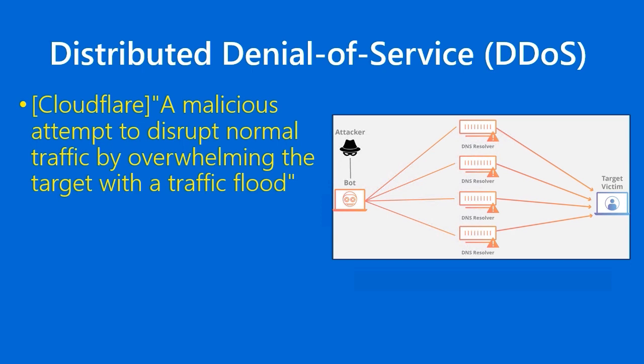A Denial of Service occurs when a server is no longer able to offer what it's supposed to to customers. From time to time you hear about Reddit being down, or CNN.com being down. That may or may not be the result of malicious DDoS action, but it does happen all too regularly. Bad actors want to create a Denial of Service to embarrass a company, or if they can take an e-commerce website down, they're causing a tangible financial loss. DDoS is universally a bad thing that no online business wants to see.